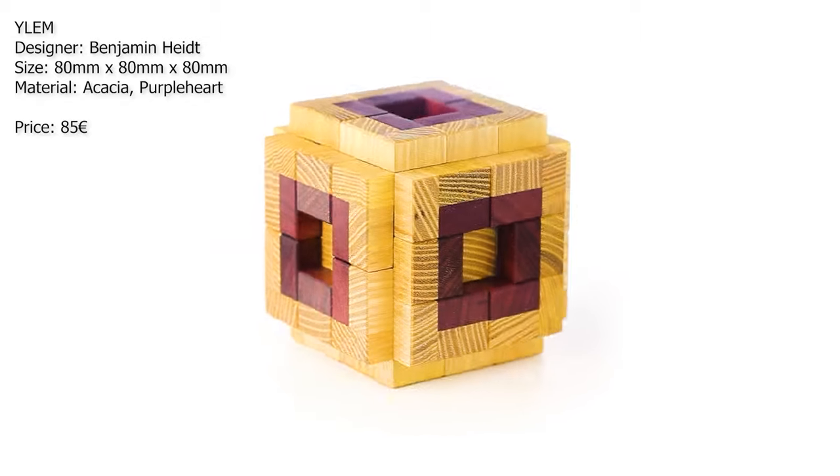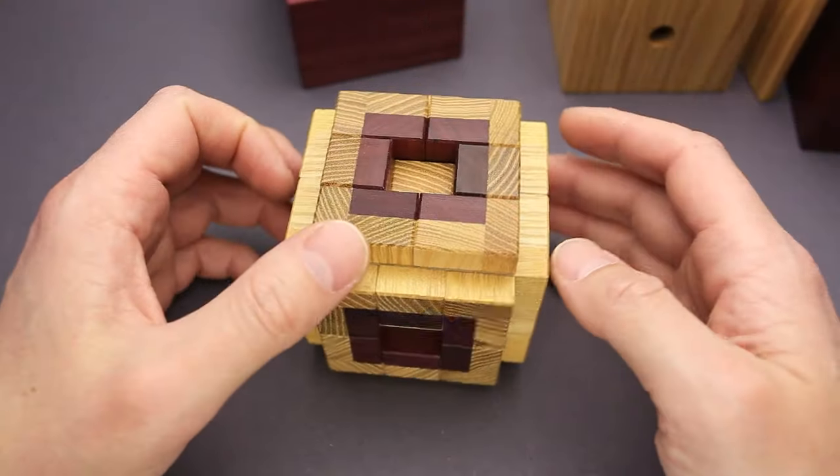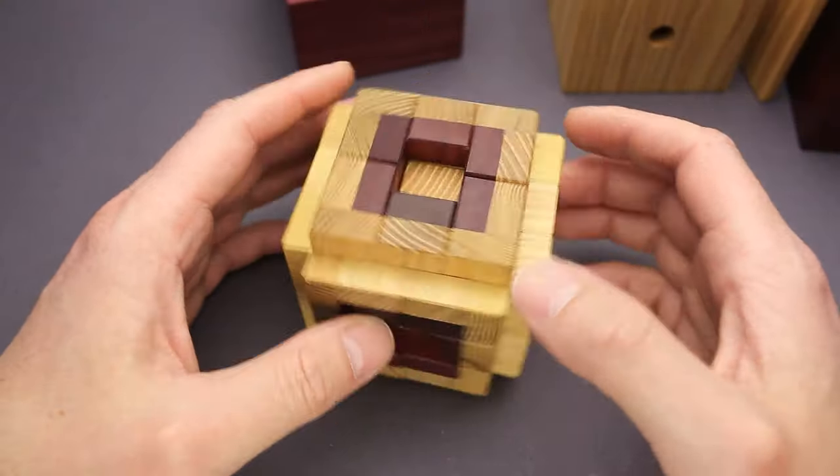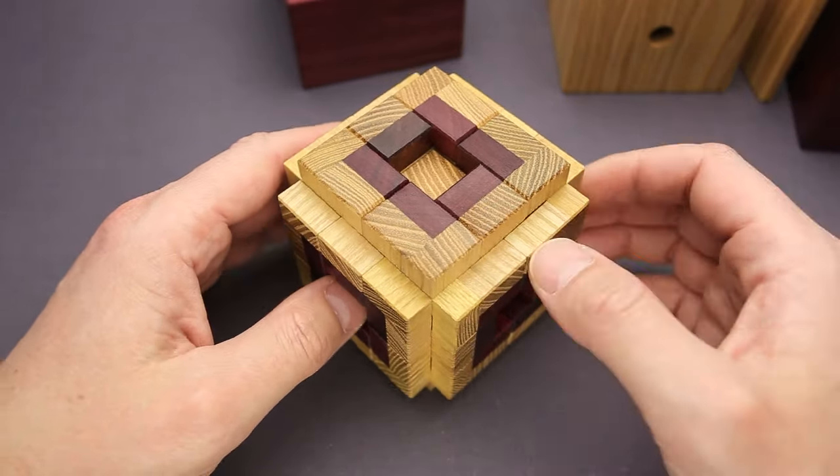The name of the next puzzle is Ilium. It was designed by Benjamin Hyde. We've seen a couple of puzzles from Benjamin Hyde in previous Pelikan release. This puzzle is made from two different types of wood, Acacia and Purple Heart.